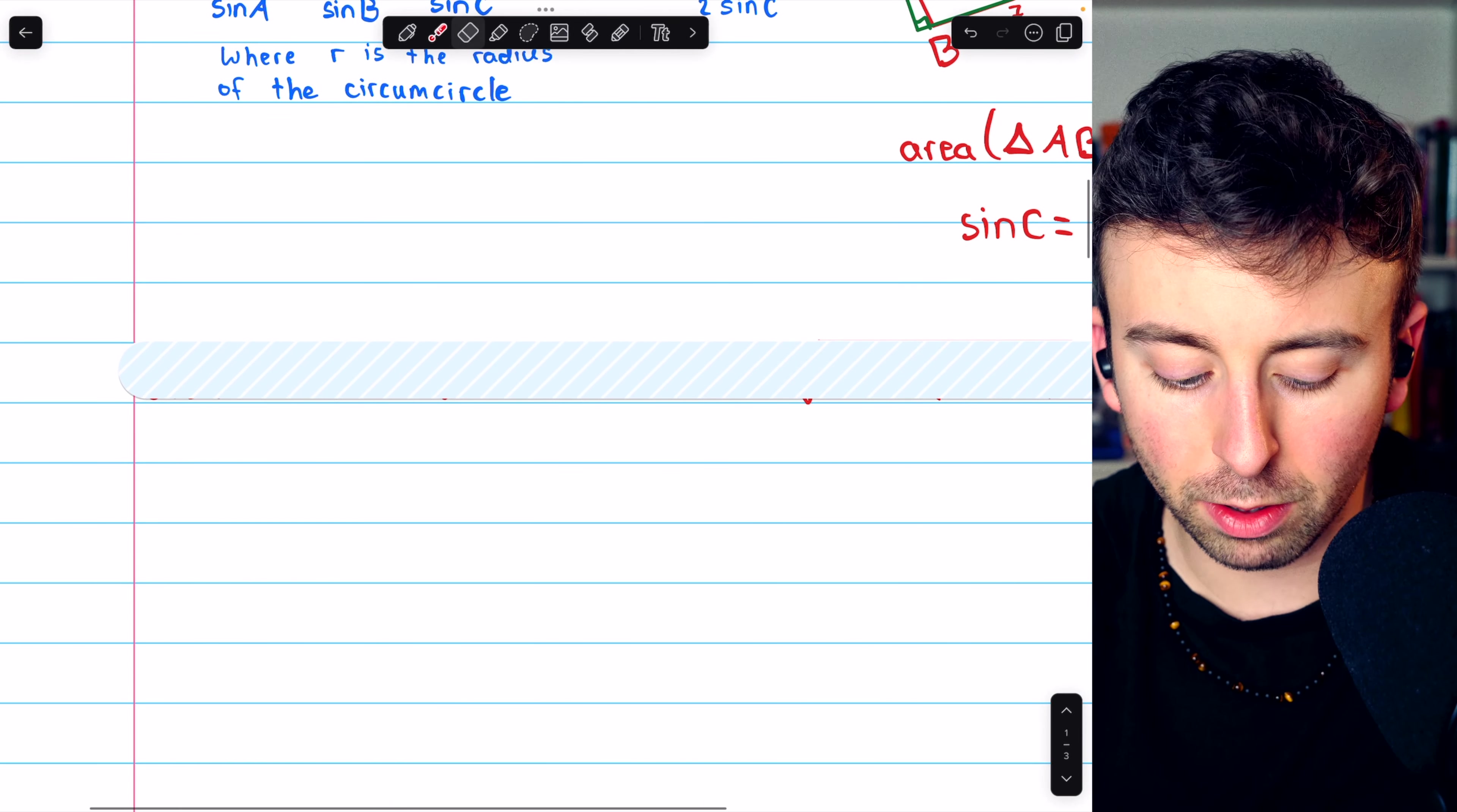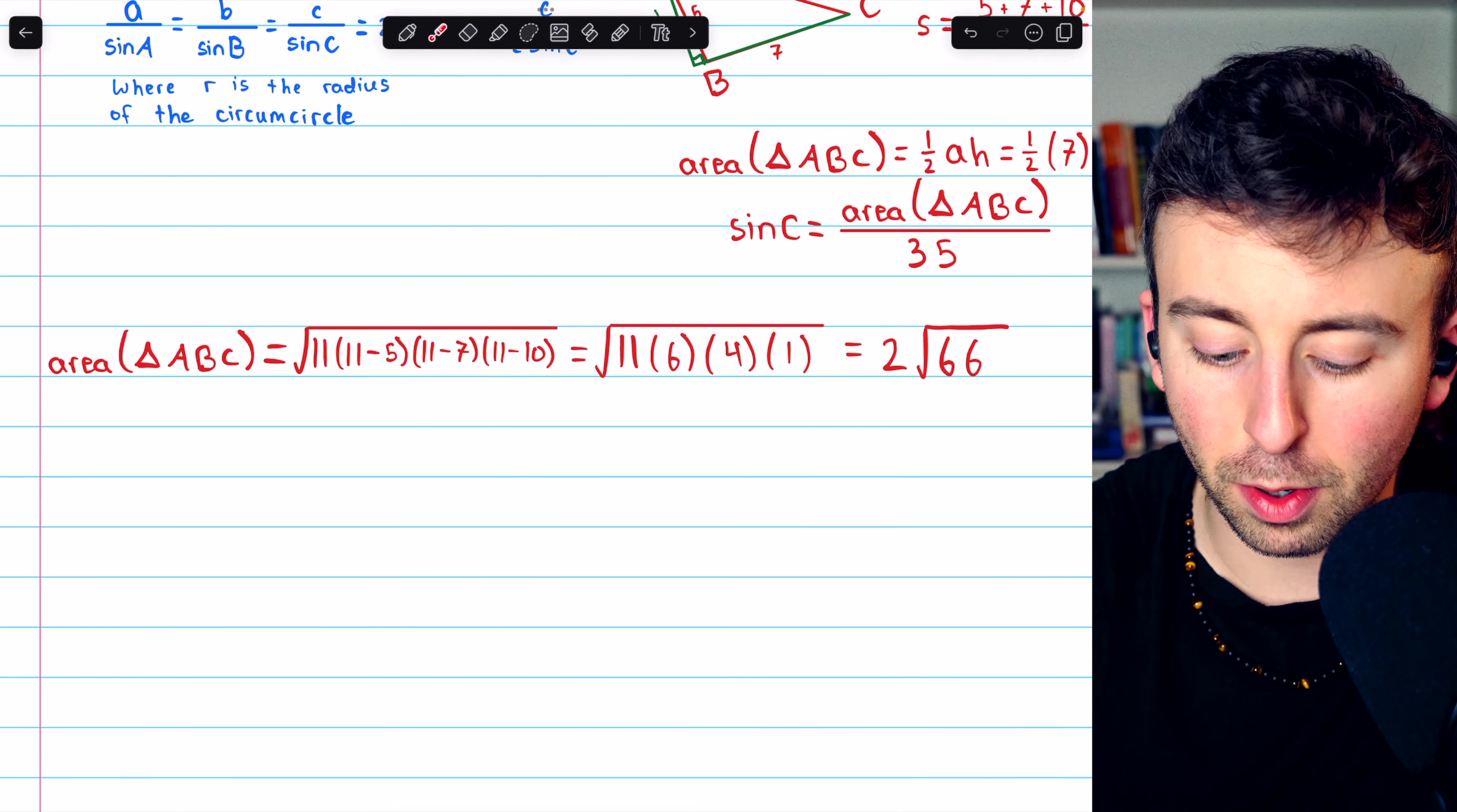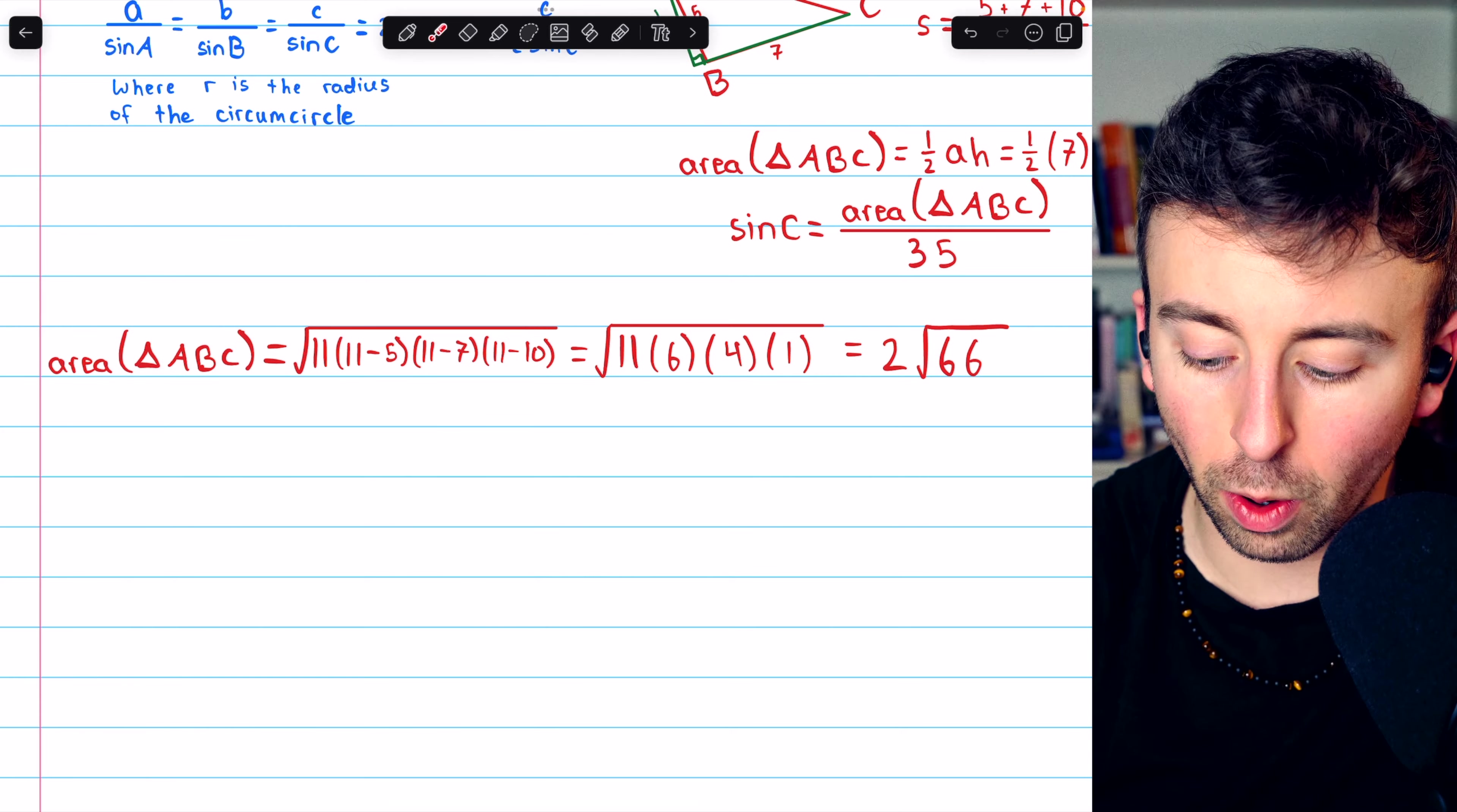And then applying Heron's formula gives us this. The area of the triangle is going to be the square root of the semi-perimeter, 11, multiplied by the semi-perimeter minus one side, multiplied by the semi-perimeter minus another side, and so on. So it's the square root of 11 times 6 times 4 times 1. 6 times 4 is 24, times 11 is 264.